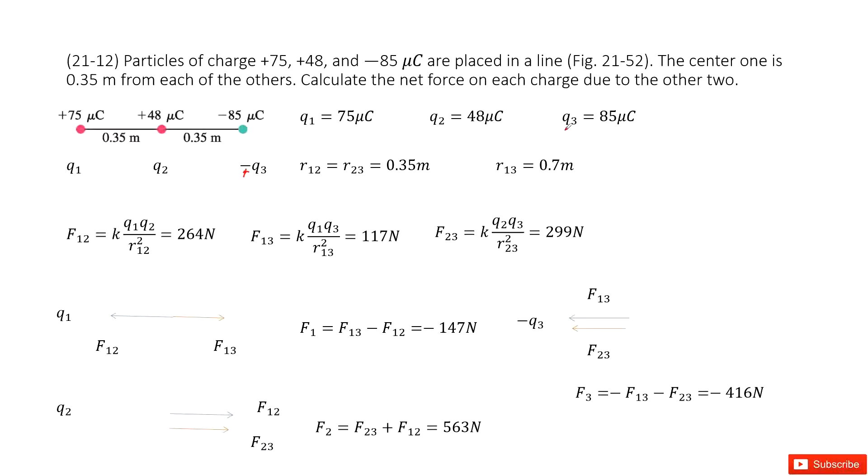So Q3 is just the charge on particle 3 and the negative sign is there. And also we can write the distance between 1 and 2, 2 and 3, and 1 and 3.